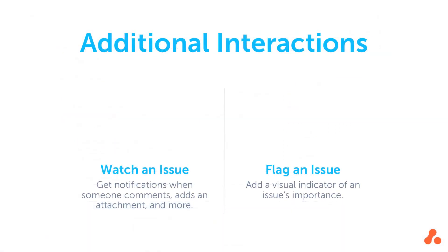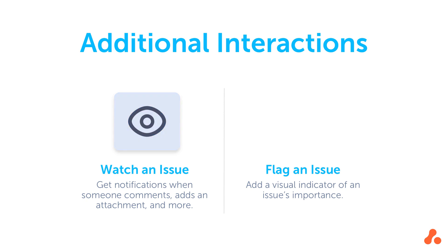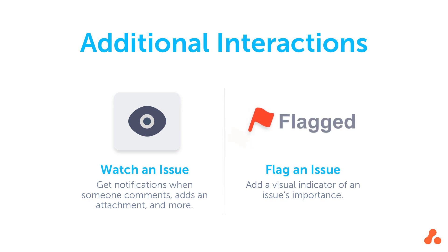As well as editing and adding information on an issue, you can interact with it in a couple of other ways. You can watch an issue if you want updates in the form of notifications — you'll receive notifications whenever someone adds a file, a comment, or interacts with the issue in several other ways. You can also flag an issue to add a visual indicator about its importance or status.